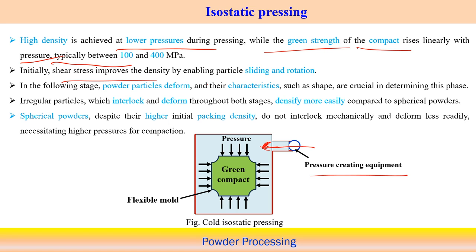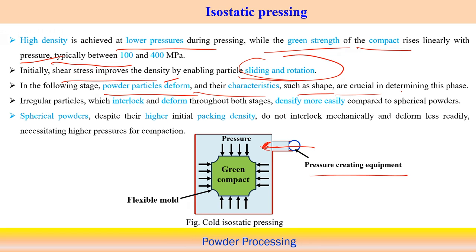Initially the shear stress improves density by enabling particle sliding and rotation. When rearrangement and further pressure application occur, sliding and rotation of particles accommodate the space between them. Shear stress indirectly improves density through sliding and rotation. Once sliding and rotation are no longer possible, particles try to deform with further pressure increase, achieving the desired shape — even complex shapes can be achieved at this stage.